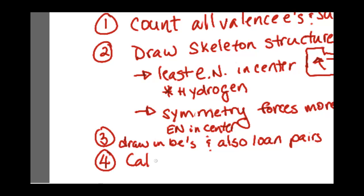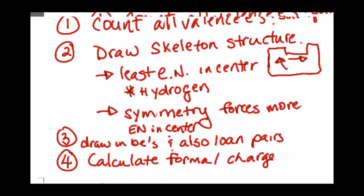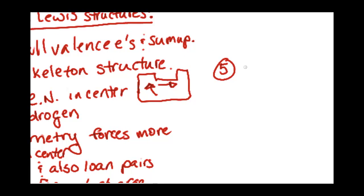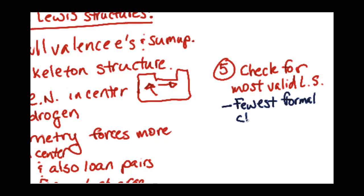Step four, calculate the formal charge. And then, the final step is to see if it's valid. So, after you do all that, step five, you'll have multiple possible Lewis structures that fit the first four steps. So, you want to check for most valid Lewis structure. And, what qualifies it as being most valid? You want the fewest formal charges.